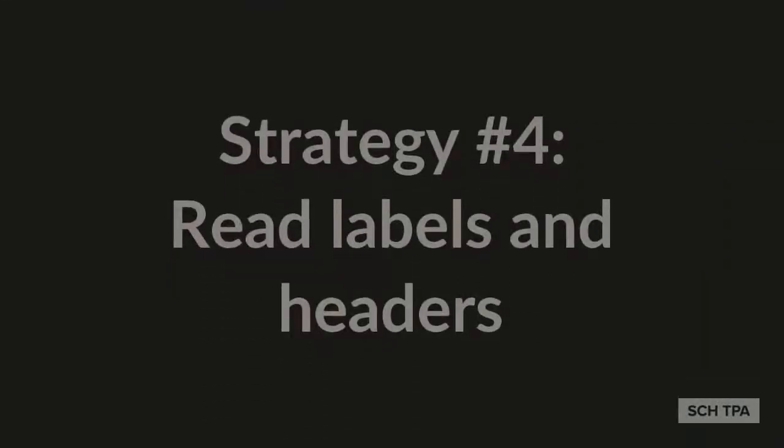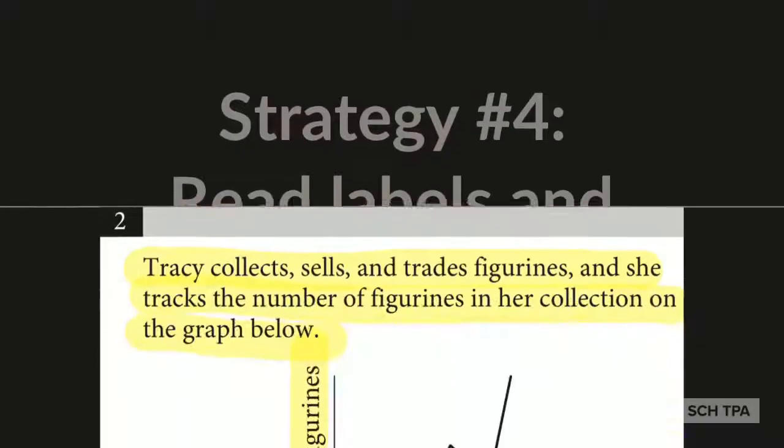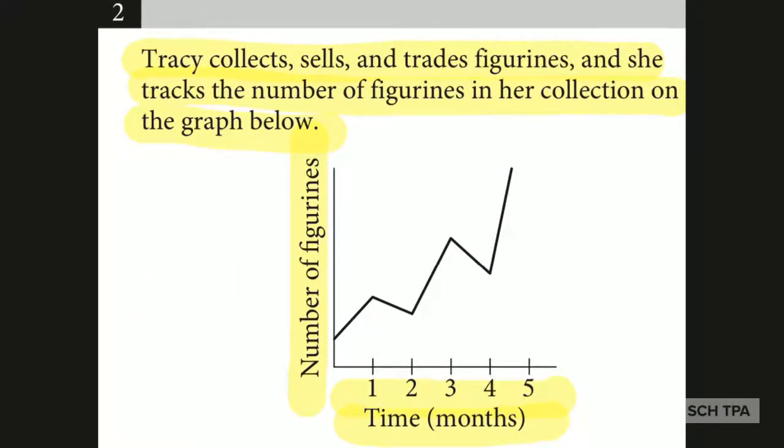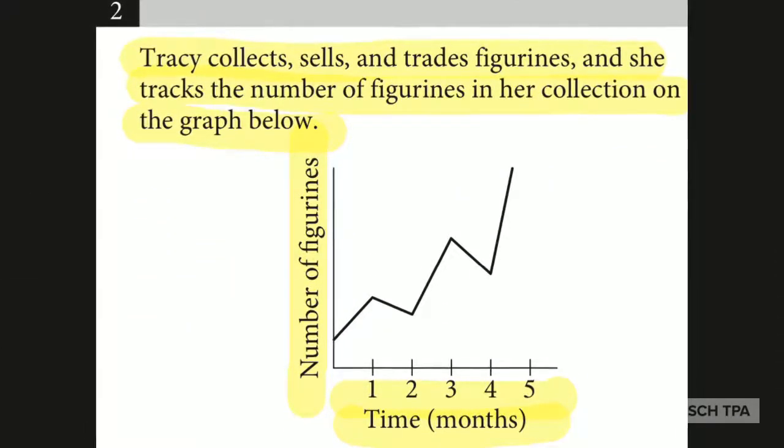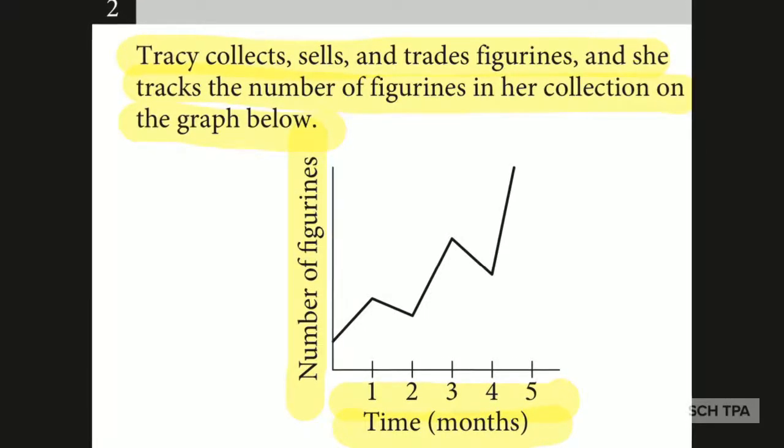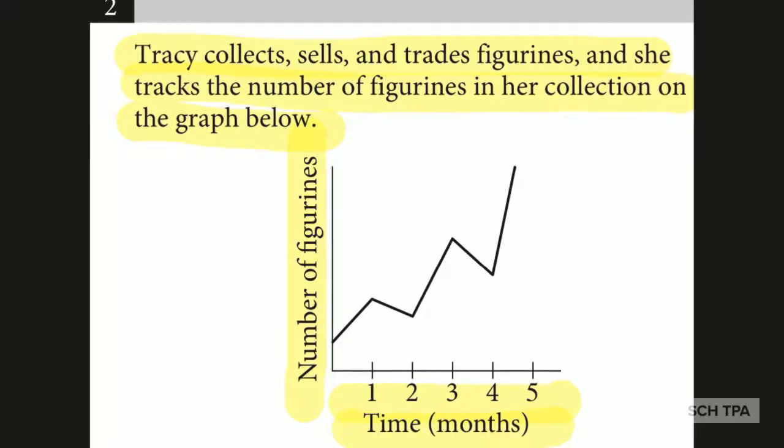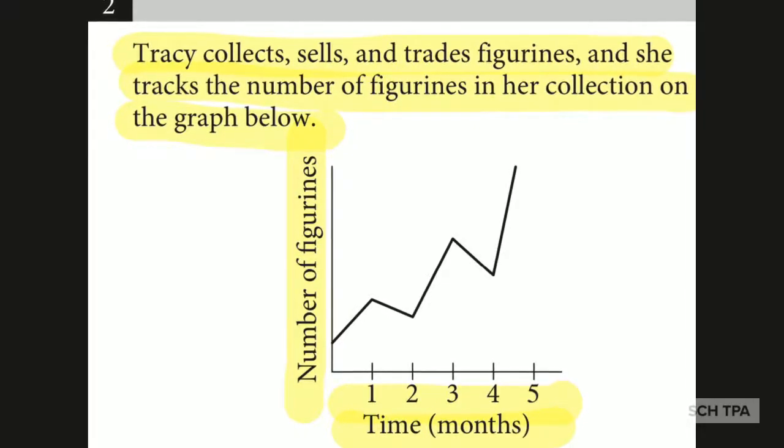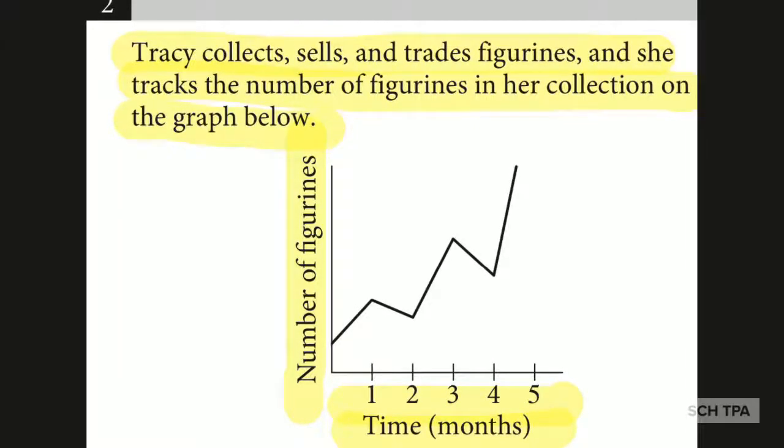Strategy number four, read labels and headers. All of these highlighted words are incredibly important to read. Reading this information forms in your head a picture of the question that has more detail and depth. And there are plenty of trapped answers for people who don't read this stuff.